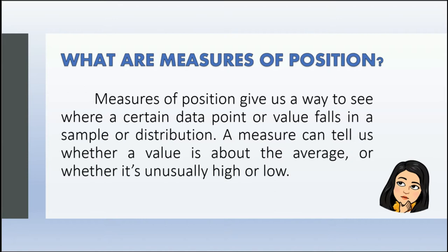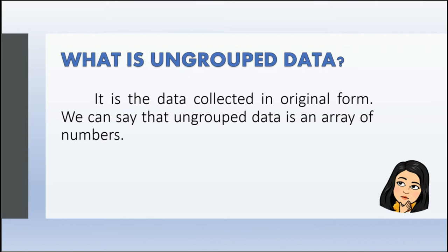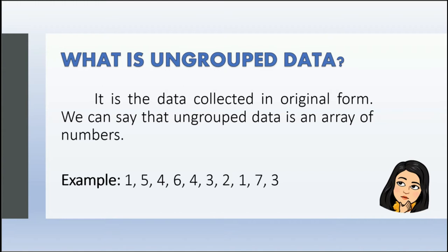Ordinal variables are those variables that have an order like 1st, 2nd, and 50th. How about ungrouped data? Ungrouped data is the data collected in original form. We can say that ungrouped data is an array of numbers. For instance, if you take a survey, the raw answers you get are the ungrouped data.